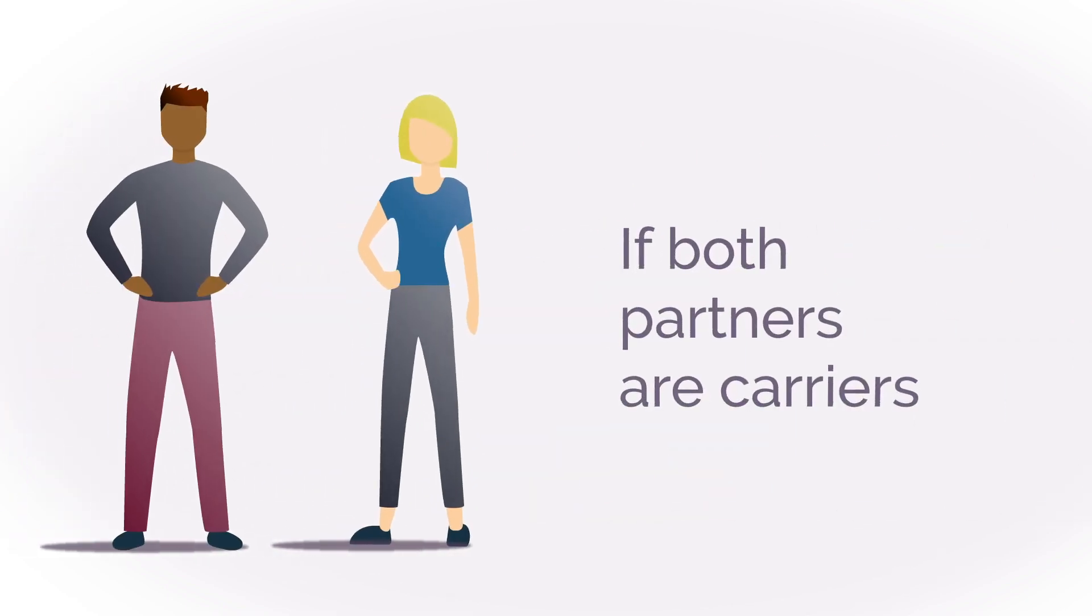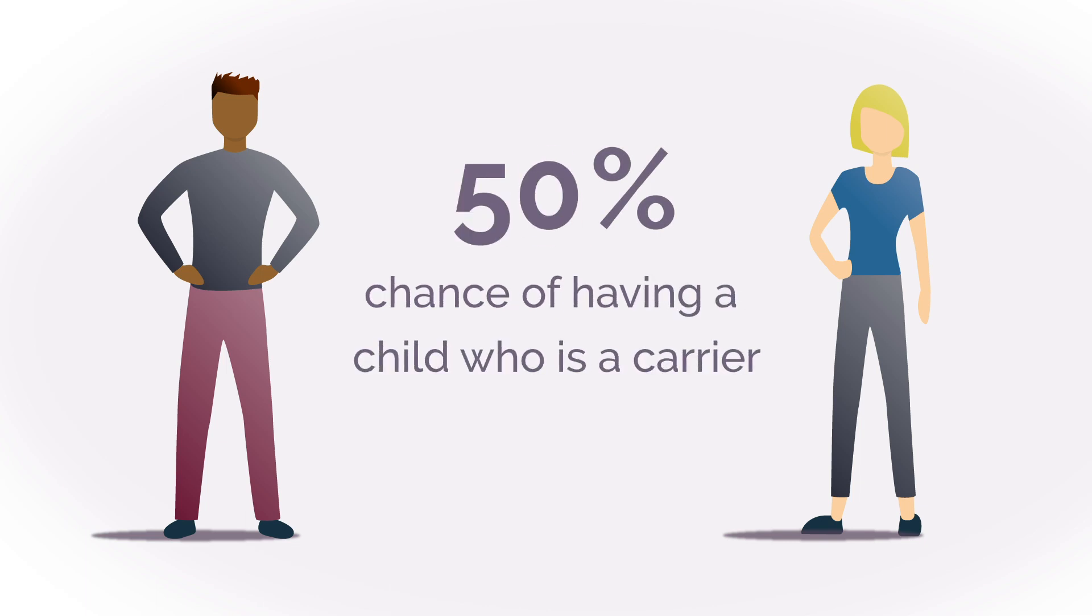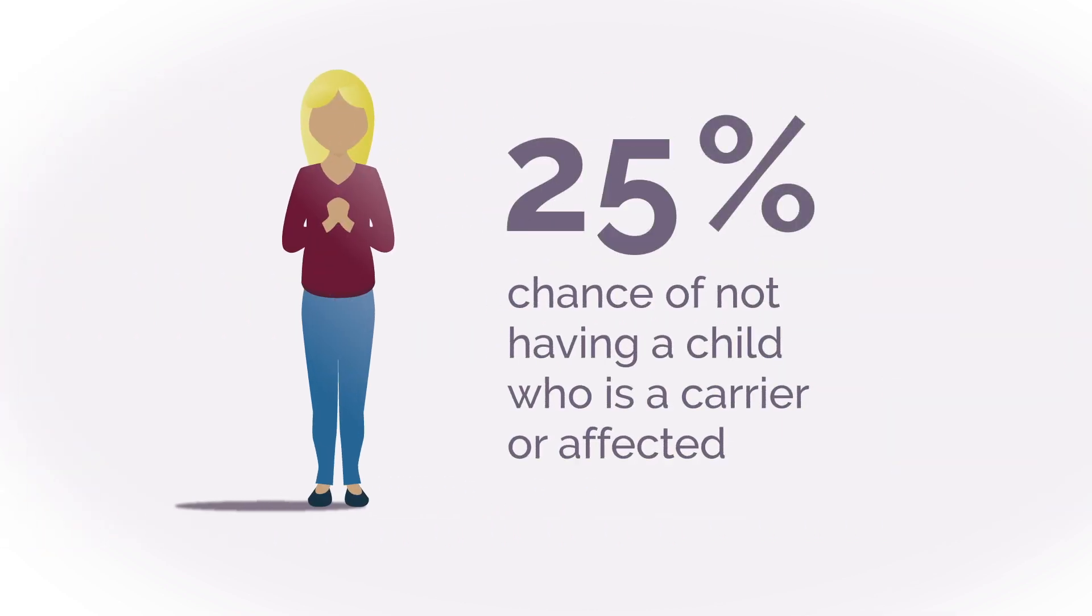In each pregnancy, reproductive partners who are both carriers of the same genetic condition have a 25% or 1 in 4 chance to pass on their non-working copy of the gene and have an affected child. A carrier couple also has a 50% or 1 in 2 chance of having a child who is a carrier, like themselves, and a 25% chance of having a child that is not a carrier or affected.